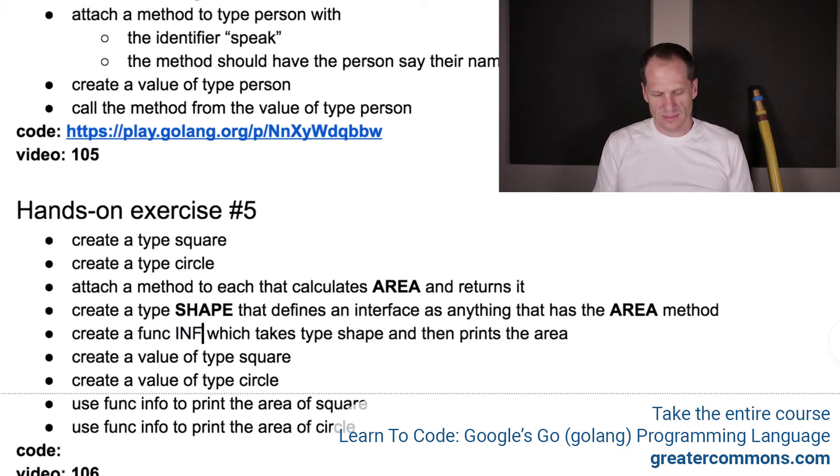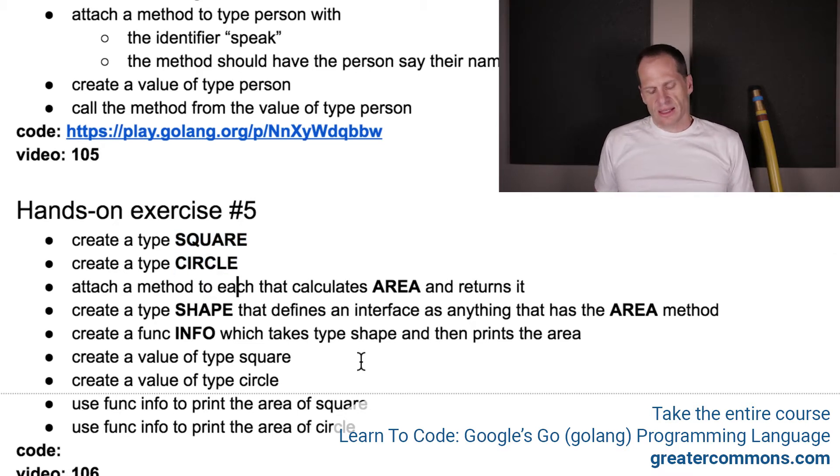Create a func info which takes type shape and then prints the area. Create a value of type square. Create a value of type circle. And use func info to print the area of the square. Use func info to print the area of circle. And so we'll do square here. And we'll do circle here. And make those bigger. Alright, so that's your hands on exercise.